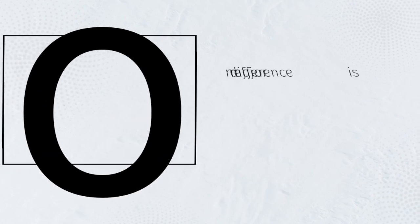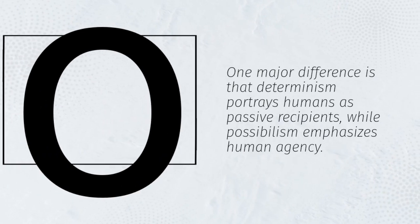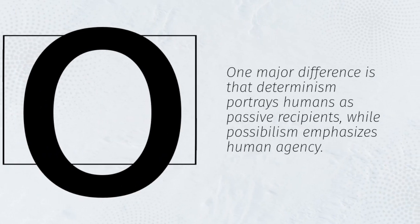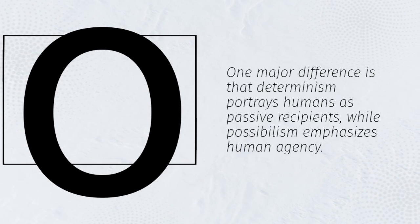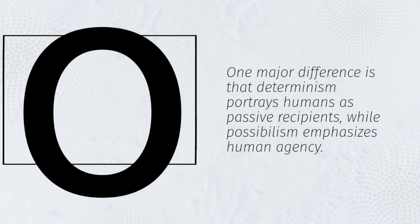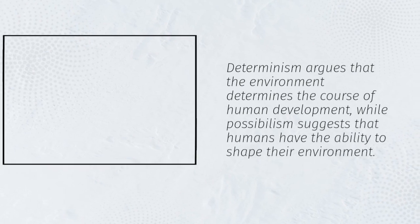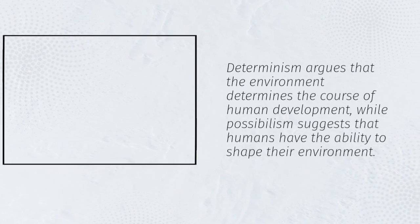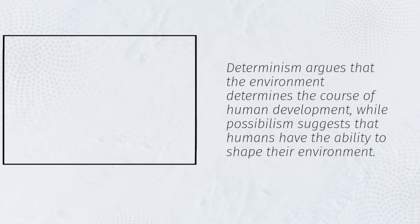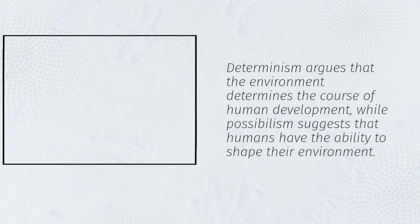One major difference is that determinism portrays humans as passive recipients, while possibilism emphasizes human agency. Determinism argues that the environment determines the course of human development, while possibilism suggests that humans have the ability to shape their environment.